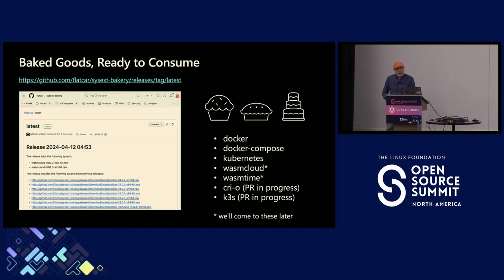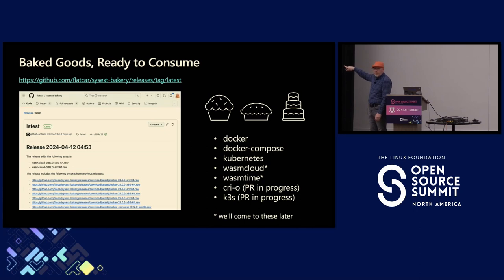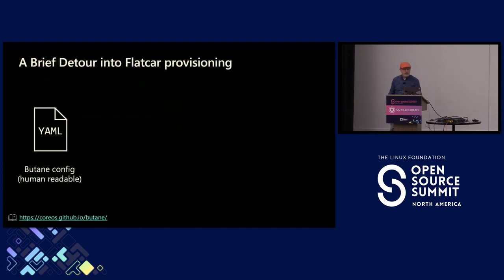There are already a bunch of sysexts up in the Flatcar repo that you can go try out — Docker Compose, the Kubernetes one we use for Cluster API, a few Wasm ones. We'll talk about Wasm a little bit later. There are some PRs in progress for other things, so there are some things you can go and use off the shelf.